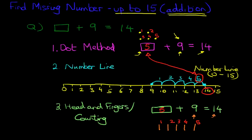Now just have a look at the answers we've got. We've got 5 over here using the dot method. We've got 5 using the number line. And we've also got 5 using the head and fingers counting method. Now the head and fingers method is very important because it is mental arithmetic. You can do this without pen and paper. So that is find the missing number with numbers up to 15 for addition.